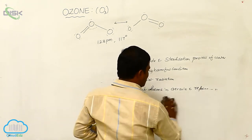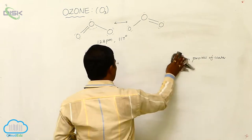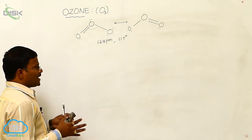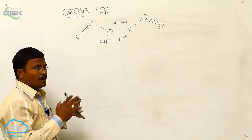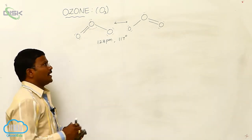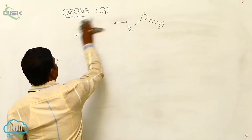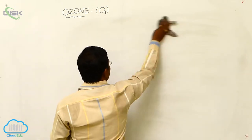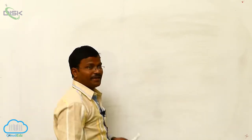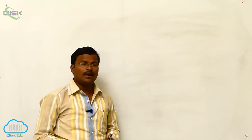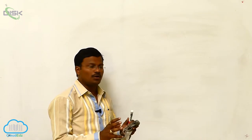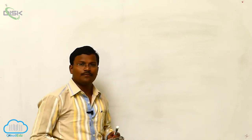So 128 picometers bond length and 117 degrees bond angle are present in the structure of ozone. Ozone is an allotropic form of oxygen; it helps filter harmful UV radiation from reaching Earth. It is produced from oxygen in the presence of sunlight at nearly 20 kilometers from Earth's surface. It is a strong oxidizing agent due to the release of nascent oxygen.